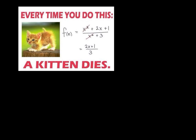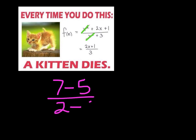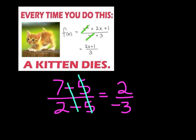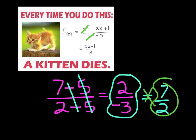Every time you cross out just a single term in a group, a kitten dies. You cannot do that, and let me prove it to you. What if I had seven minus five over two minus five? If I did the math on that, I would get two divided by negative three: negative two thirds. If I said I can cross out those fives and those minuses and just get seven halves — well, seven halves is not the answer. The answer is negative two thirds. They aren't even close. It just breaks the laws of math. Do not kill any kittens in my classroom.